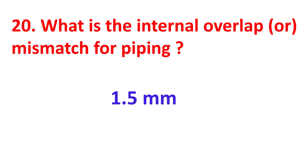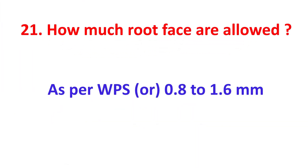What is the internal overlap or mismatch allowance for piping? 1.5 mm. How much root gap is allowed? As per WPS, or 0.8 to 1.6 mm.